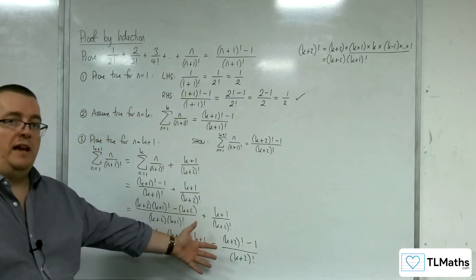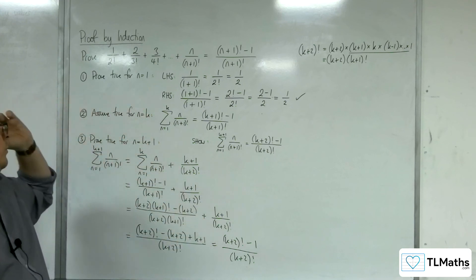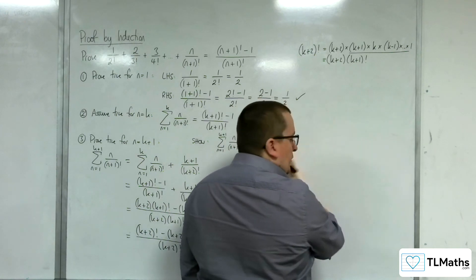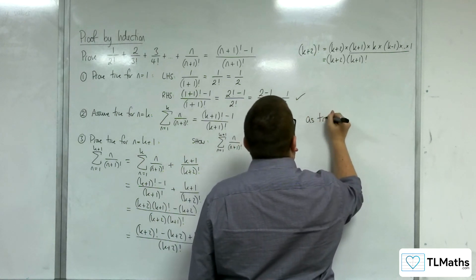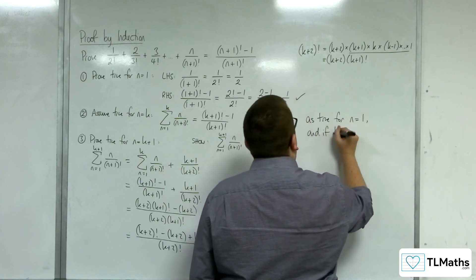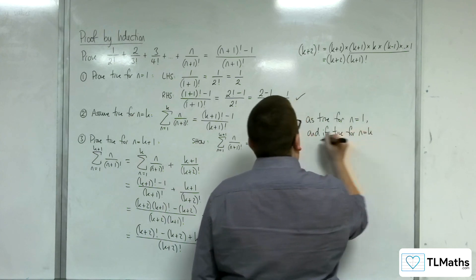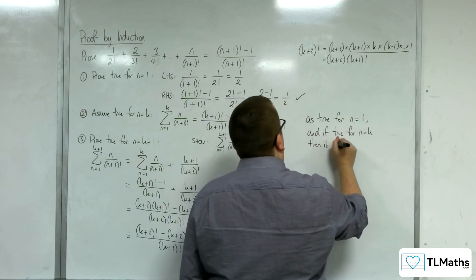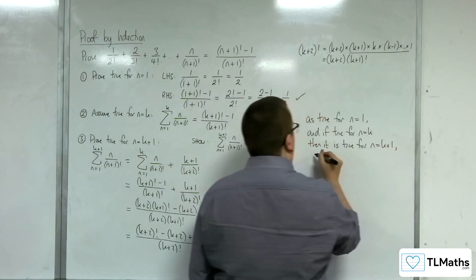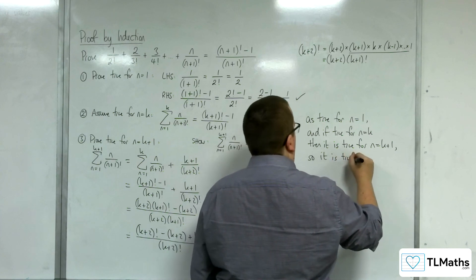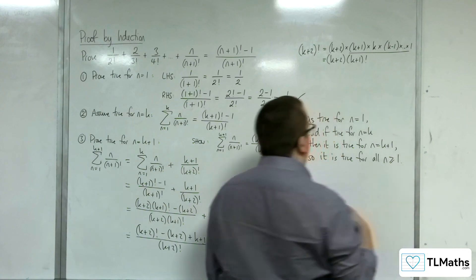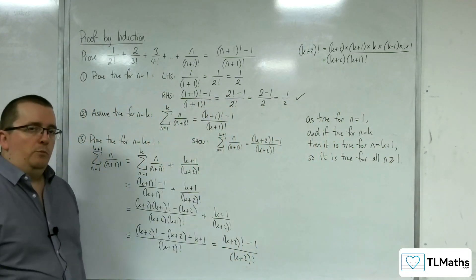So it is true for n equals k plus 1, assuming n equals k is true. To conclude: as it is true for n equals 1, and if true for n equals k then it is true for n equals k plus 1, it is true for all n greater than or equal to 1. That completes the proof.